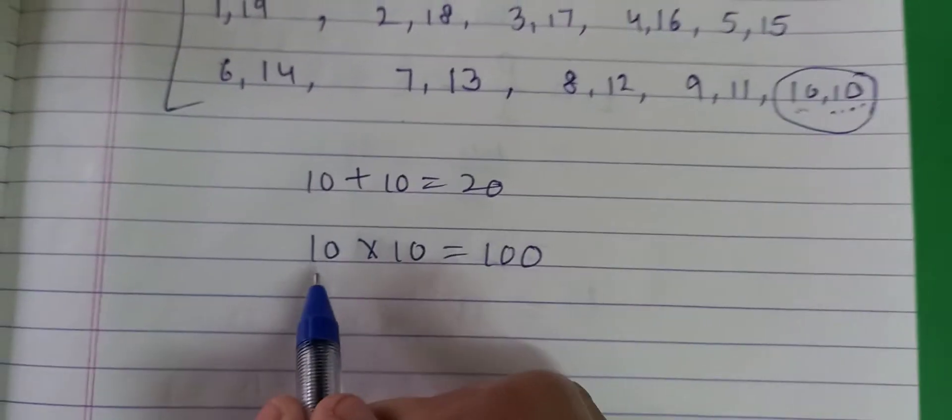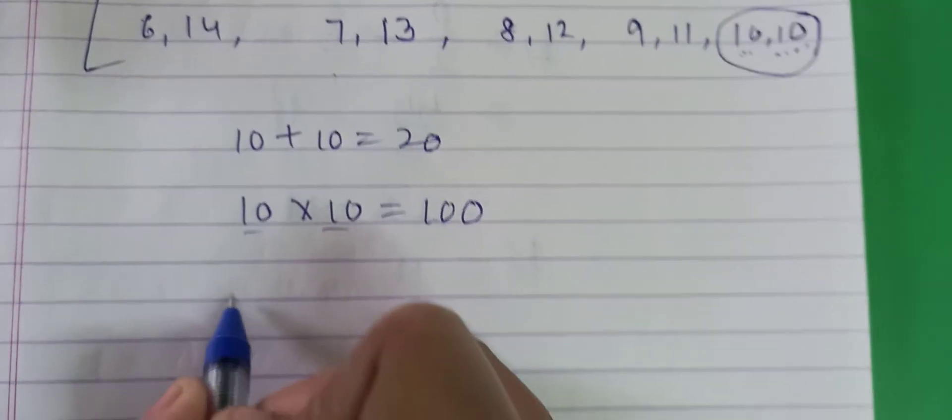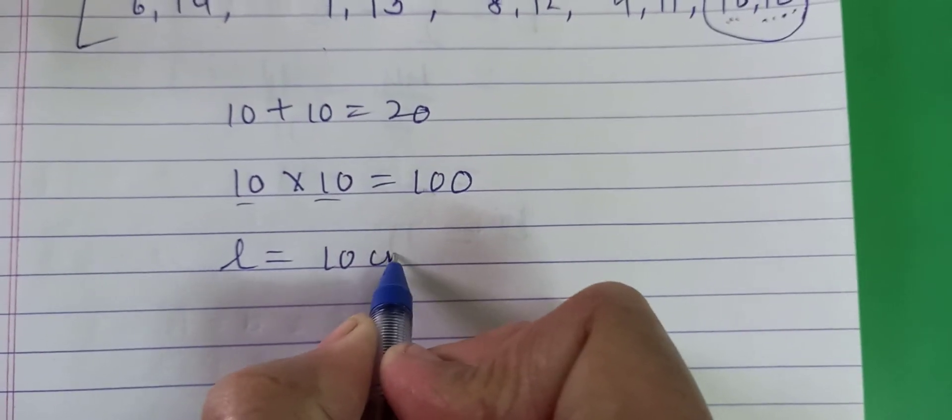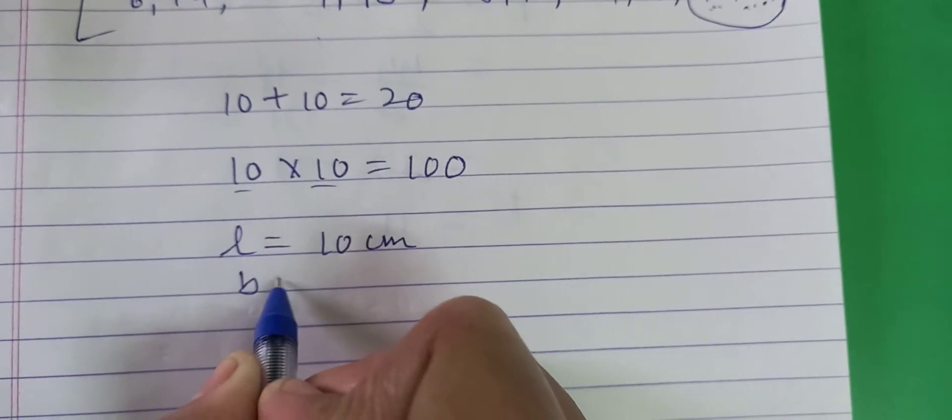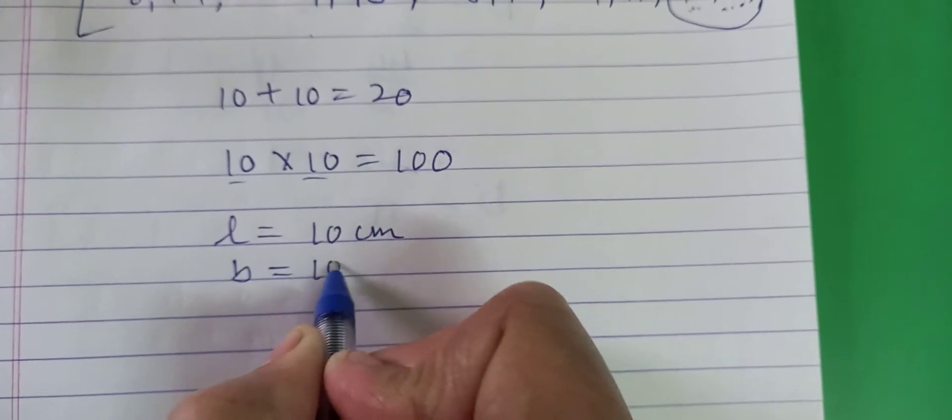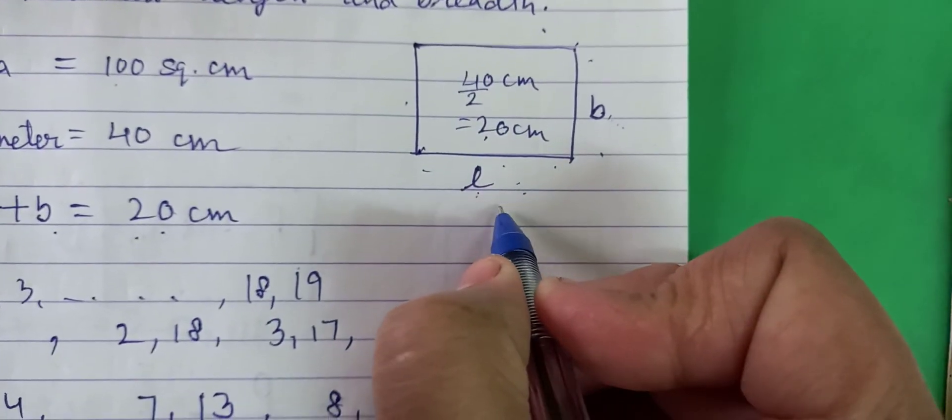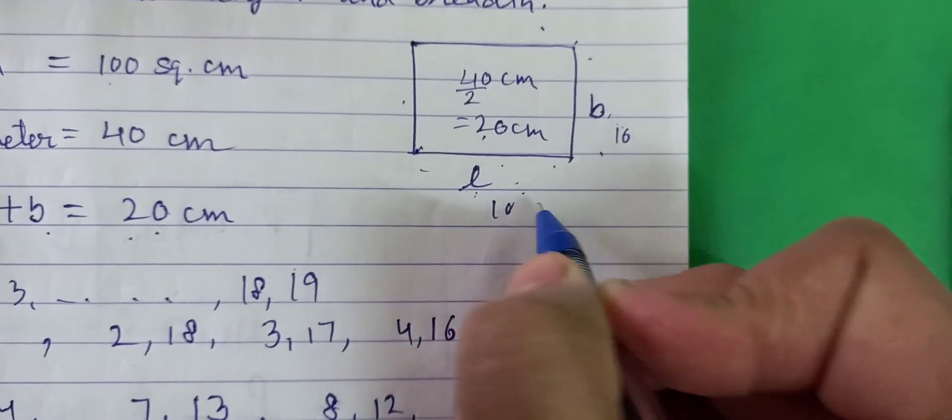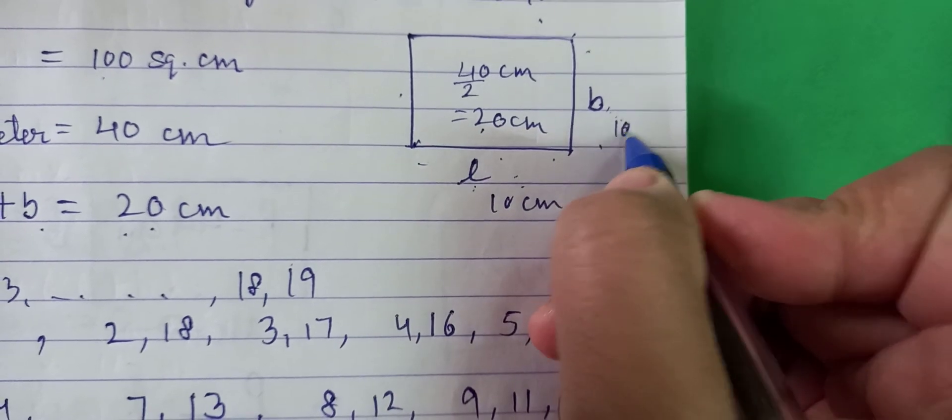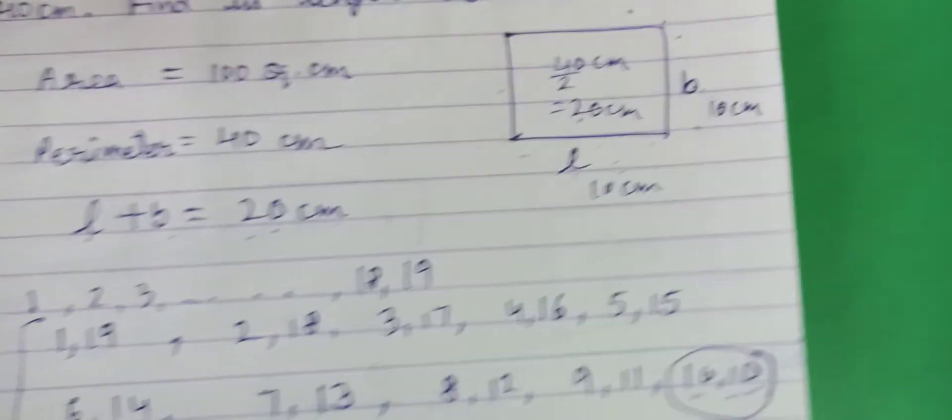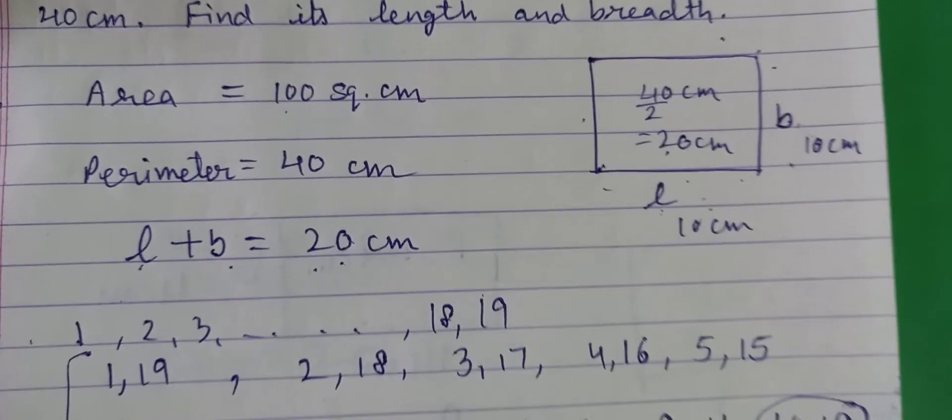So, यही हमारे दोनों length और breadth हैं. L is 10 cm, length is 10 cm and breadth is also 10 cm. So, it means यह हमारा shape है, यह एक square है, both are 10 cm. तो इस तरीके से हमें यह find करना है.